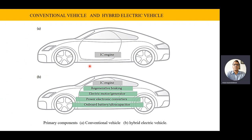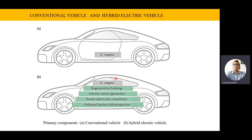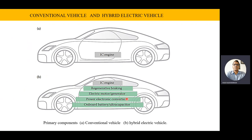If you compare the conventional vehicle and hybrid electrical vehicle, this is a simple comparison. In the conventional vehicle, only the IC engine is the main propulsion system. Now if we go for the hybrid electric vehicle, it will have an IC engine — no doubt, because it is a hybrid — but in addition it will have electric propulsion. Because of this electric propulsion system, it requires power converters to get suitable supply from the battery. Also we can have additional energy sources such as onboard battery and ultracapacitor. So this is a simple comparison of IC engine and hybrid electric vehicle.